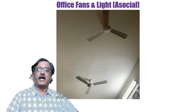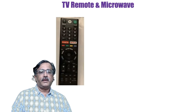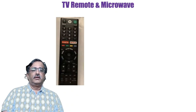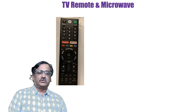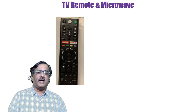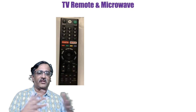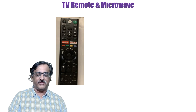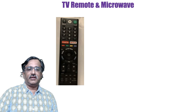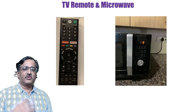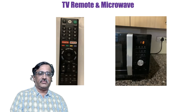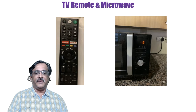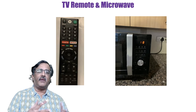Moving on to ambiguity. This is the television remote from my house. First time I picked it up, which button am I supposed to push? It is so complicated with all these buttons. This one is my microwave from my kitchen — again the same thing. It is complicated.